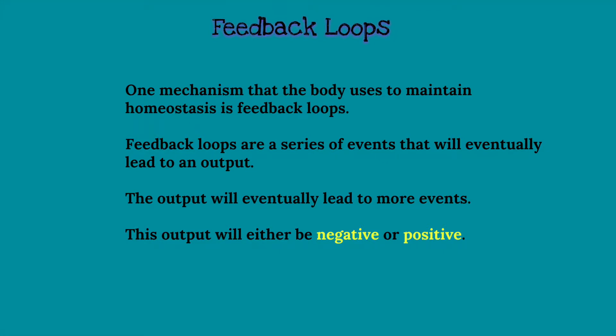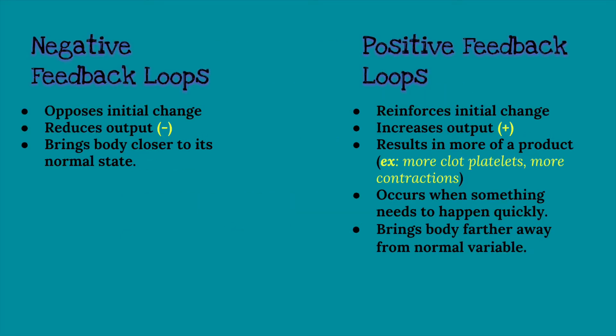Many variables of the body, such as your temperature or your blood pressure, have a set point. The way the body maintains the set point is through feedback loops. These feedbacks lead to output, where the output can be negative or positive. So when a change in the body's normal variable or set point is detected, actions are triggered to bring the body back to its normal state.